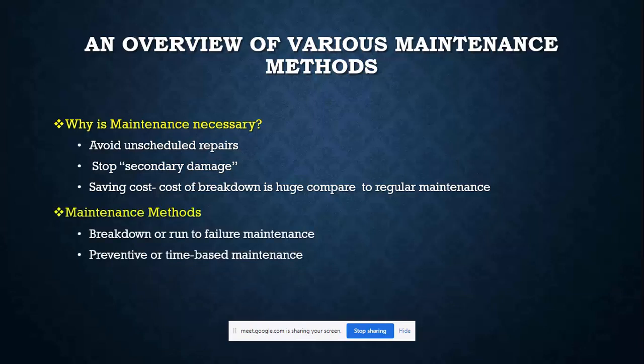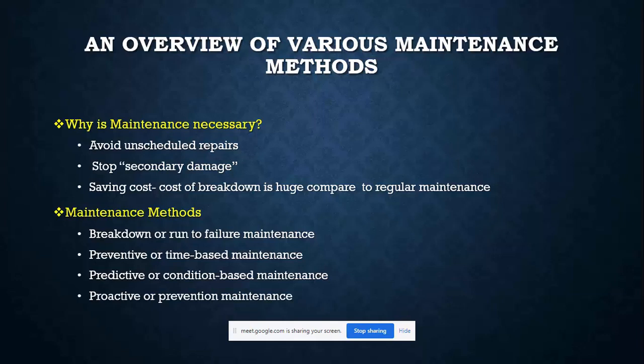There are different maintenance methods. The first is breakdown or run-to-failure maintenance. The second is preventive or time-based maintenance. The third is predictive or condition-based maintenance. The last is proactive or prevention maintenance. These are all the types, and we need to understand why maintenance is necessary.